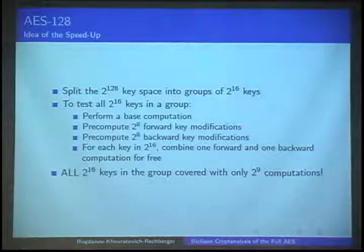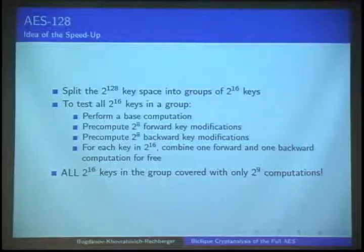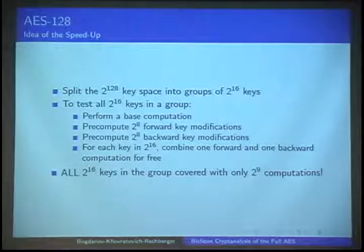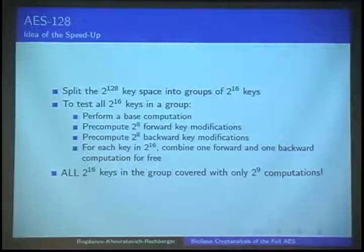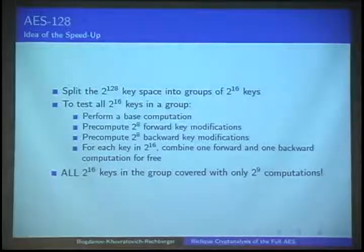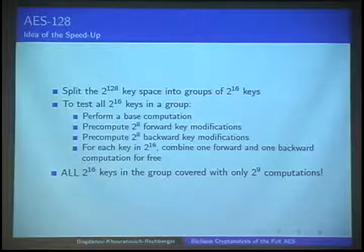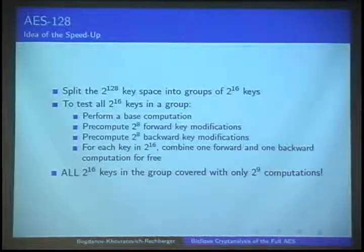If you look closely at that, you might see this—it's exactly a biclique over three rounds of AES covering 2^16 keys. Then in the key recovery, we split the entire key space into groups of 2^16 keys each, each corresponding to a biclique. Then inside each of those, we compute the 2^8 forward propagations, the 2^8 backward propagations, and then we combine them at the cost of 2^9 computations only. With this we cover 2^16 keys. This is the major source of our improvement.